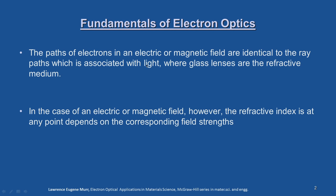The paths of electrons in an electric or magnetic field are identical to the ray paths associated with light, where glass lenses are the refractive medium. This approach was first made by German scientists who applied this analogy of the light optical system to the dynamics of electrons in the electron optical system. In the case of an electric or magnetic field, the refractive index at any point depends on the corresponding field strengths.